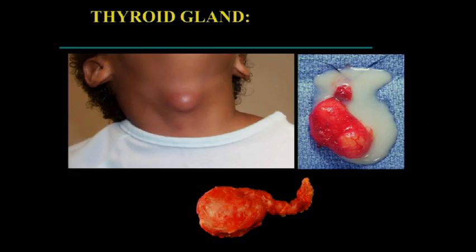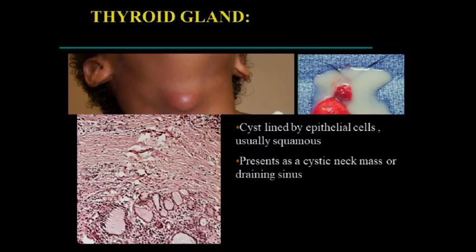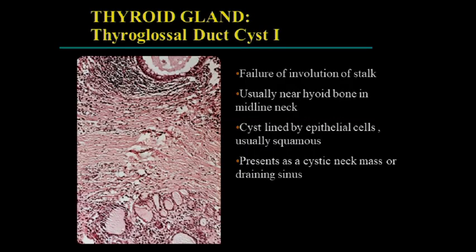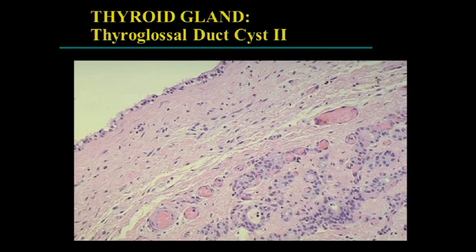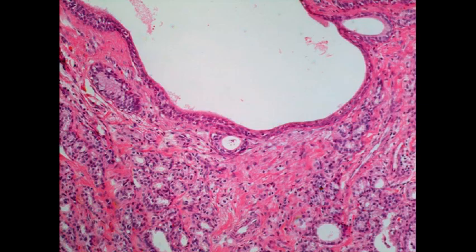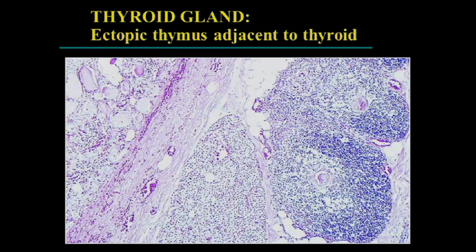Here's a young child with a midline cystic neck mass and a stalk — this is a thyroglossal duct cyst. It may become secondarily infected. You may or may not see thyroid tissue around it. The lining can be squamous or ciliated respiratory-type epithelium, or a combination. If it's become infected, you may not really see much of a lining.